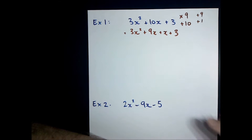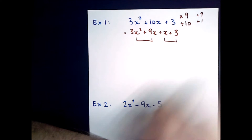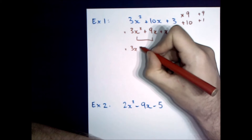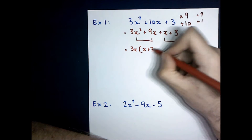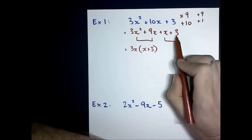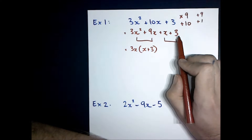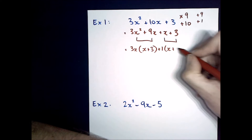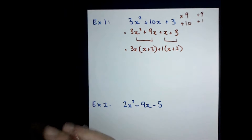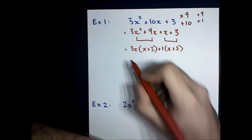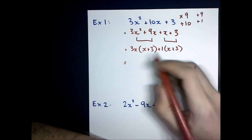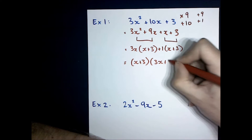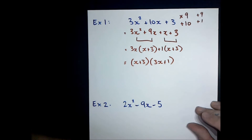Now I'll do my factorising by grouping — I'm going to group these two and these two. I can take 3x out of the first two, which will leave me with x plus 3. And the only thing I can factorise out of x and 3 is just the number 1, so I'll factorise out plus 1, which leaves me with x plus 3 because I haven't taken anything out. Then I factorise my brackets — I take out x plus 3, which leaves me with 3x plus 1. And then you're done.